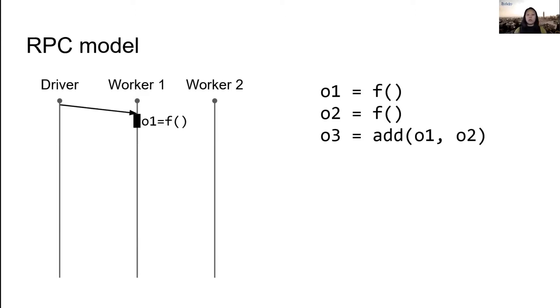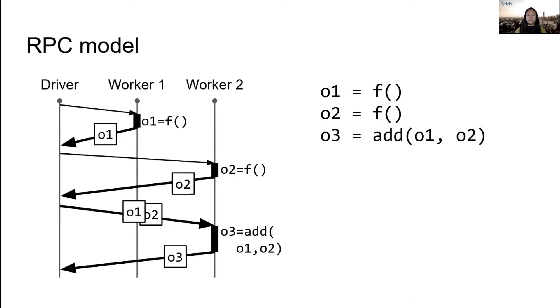We'll begin by sending an f task to worker one. Once the worker finishes the task, it sends back the return value. We do the same to compute o2, and then finally we can send the values back to worker two to compute their sum. Obviously this is a really naive way to execute the program and we're not taking advantage of the workers. The two problems are that there's a lot of unnecessary data movement going on and there's no parallelism in the execution.